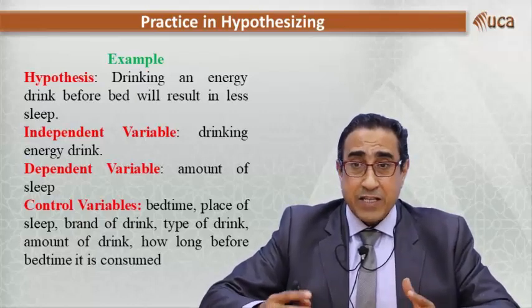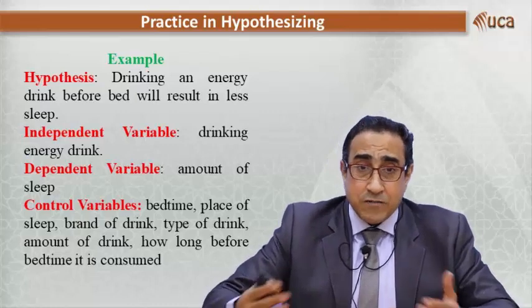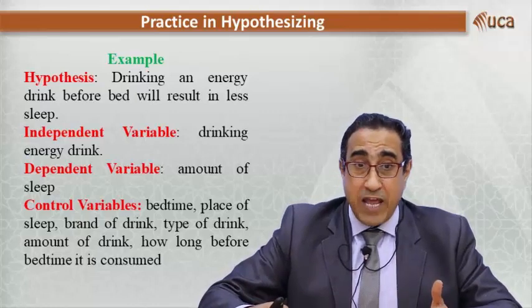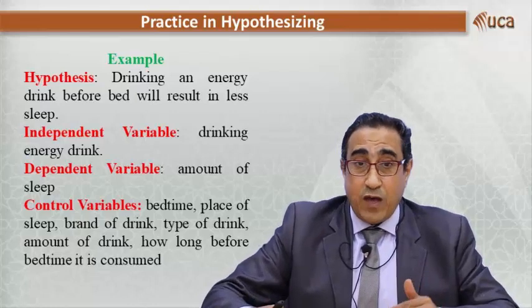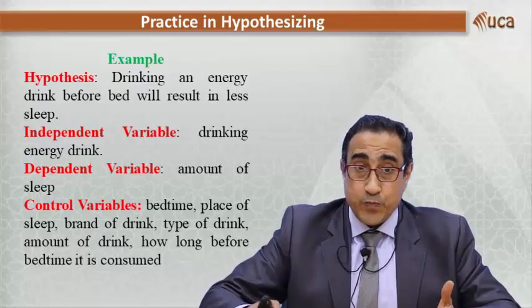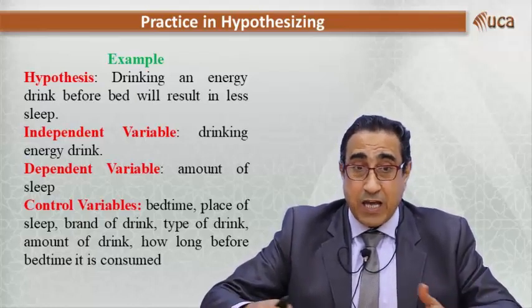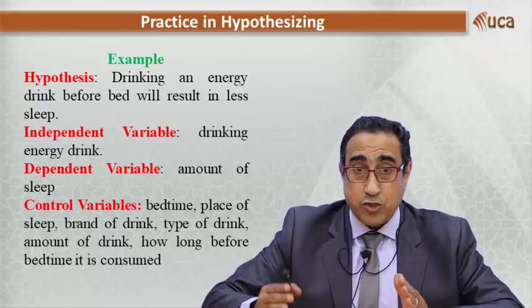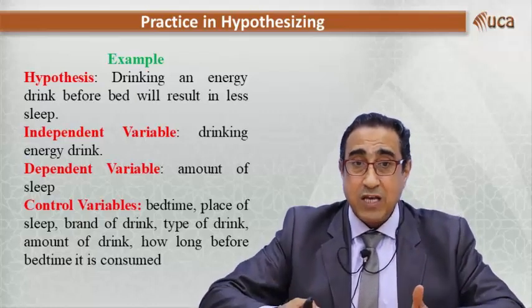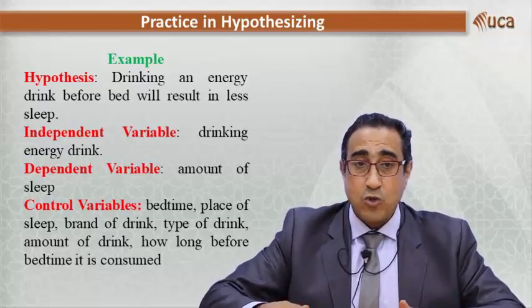Control variables are the components or elements that do not change — they remain constant during the research. These include: bedtime (the time should not change), place of sleep, brand of drink, type of drink, amount of drink (one bottle each time), and how long before bedtime the drink is given. It should not vary between two hours and one hour — all these should be controlled.